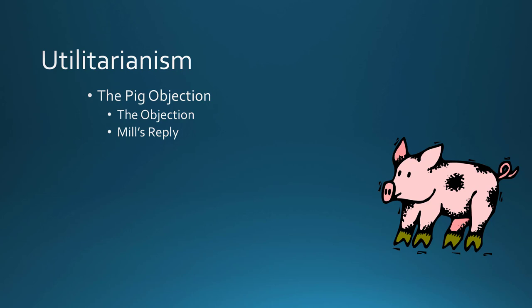Later thinkers really punched up this objection, bringing in some technology. One of the early mentions of virtual reality in philosophy involved this: imagine you could be put into a machine and given all kinds of wonderful experiences, but none of them are real. You can punch it up further with a dystopian future where people are lobotomized, put into survival tubes, and have their pleasure centers wired so they're at maximum pleasure all the time. If pleasure is the highest good, that dystopian view would seem to be the greatest good.